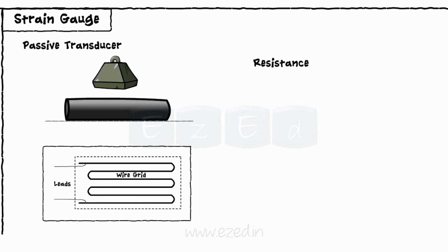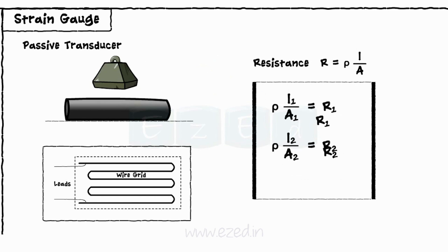We know that the resistance is given as R equals rho into L upon A. Strain gauge uses the property that change in the length and area of cross section of a wire changes its resistance.